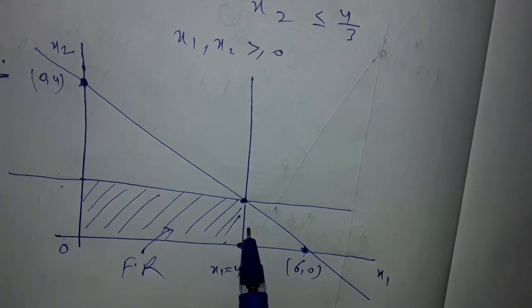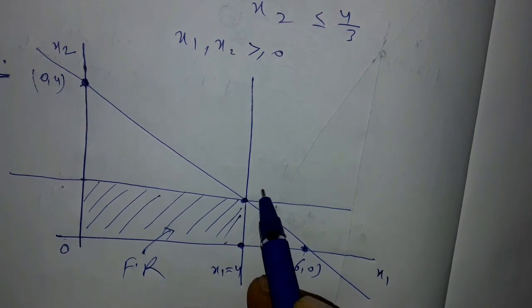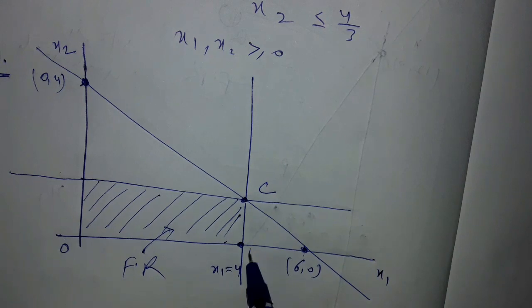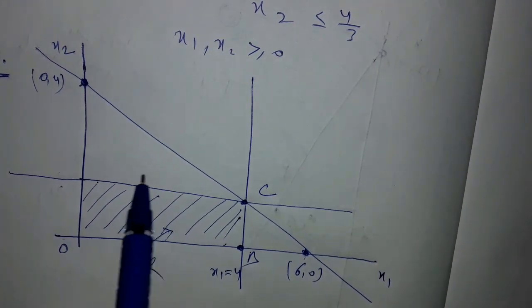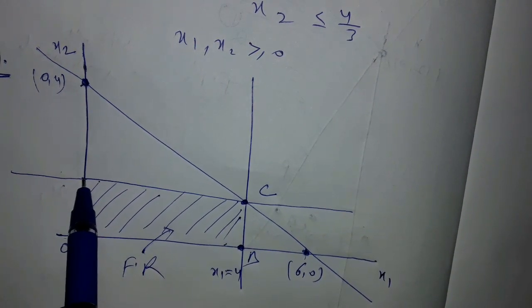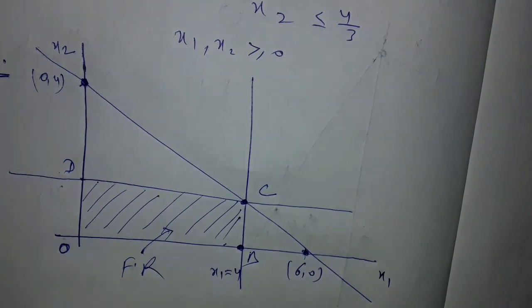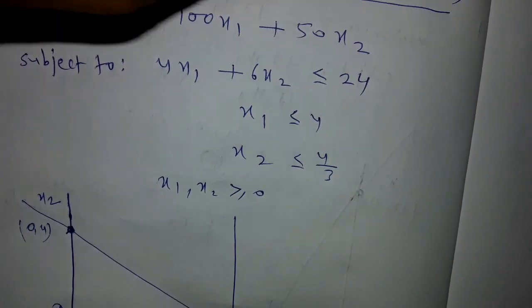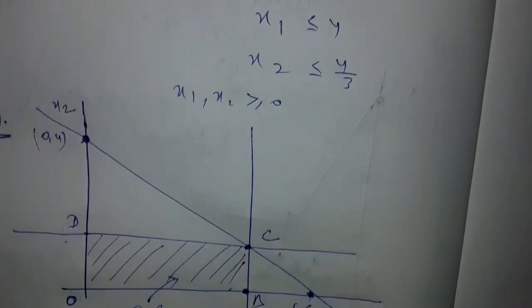Let us label the corner points: this point as C, this point as B, and since one point does not lie inside the region, we take D here. This is the origin. Now, at the origin, x1 = 0 and x2 = 0, so Z at the origin equals zero.